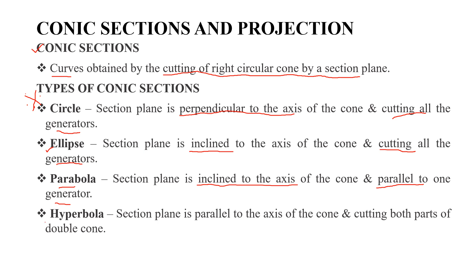Next, we will look at the Hyperbola. The section plane is parallel to the axis of the cone. The axis of the cone is parallel, and the section plane cuts both parts of the cone — the double cone on two sides. That means we have a Hyperbola.